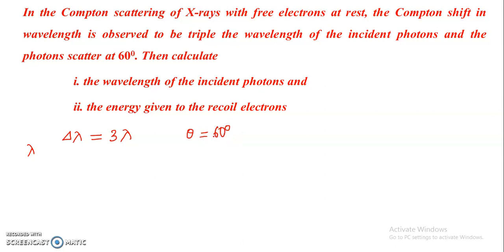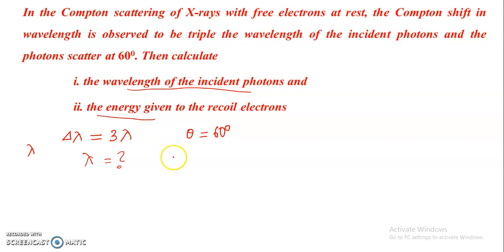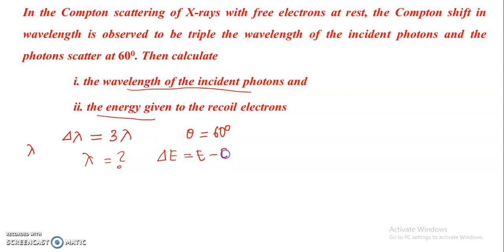We have to calculate the wavelength of the incident photons, that is lambda, and the energy given to the recoil electrons. The energy given to the recoil electrons is delta E, which equals E minus E dash — the energy lost by the incident photons.